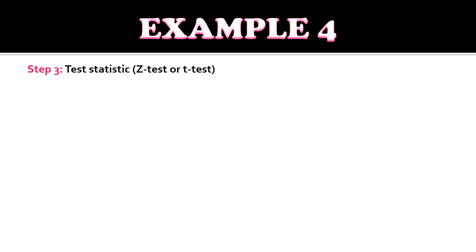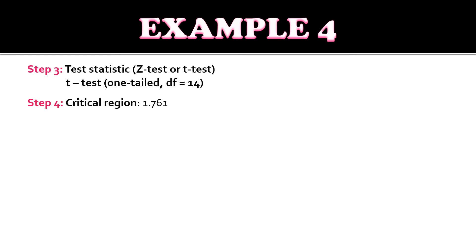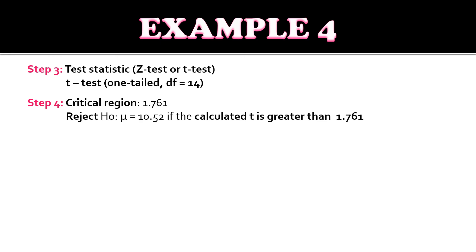For step three, we identify the test statistic. We will use the T-test since the sample size is less than 30 — one-tailed below — with degrees of freedom of 14 (n minus 1). For step four, the critical region under degrees of freedom 14, one-tailed test, and 0.05 significance level is 1.761. We reject the null hypothesis — mean equals 8.12 — if the calculated T is greater than 1.761.